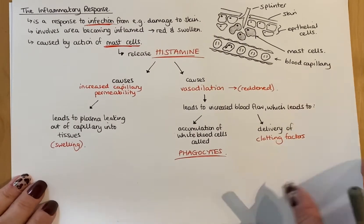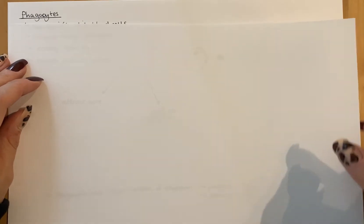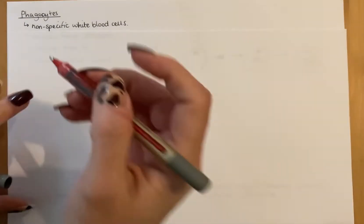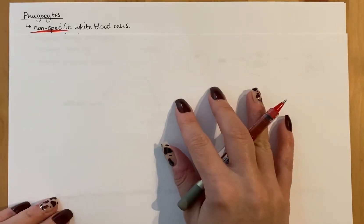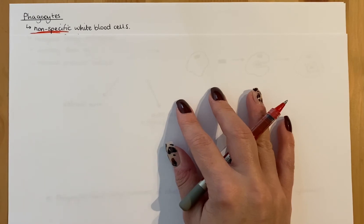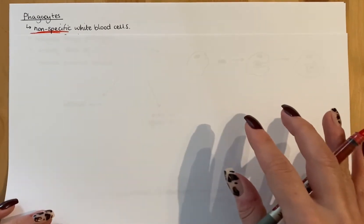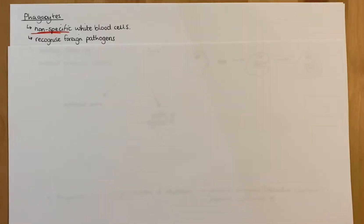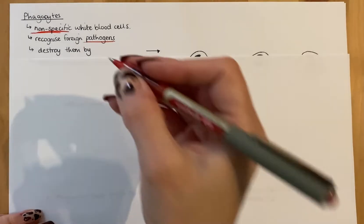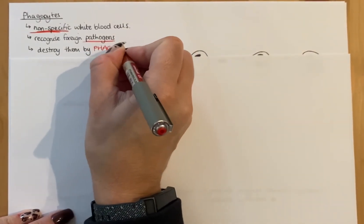Now let's talk in more detail about phagocytes, because you need to know quite a lot about these. Phagocytes are one type of white blood cell, and bear in mind we're talking about non-specific defenses right now - phagocytes are non-specific white blood cells, which is really important to remember when we get to the specific immune response. Like all white blood cells, they're produced in the bone marrow. The key thing about phagocytes is they recognize foreign pathogens - anything not part of your body - and destroy them by a process called phagocytosis.